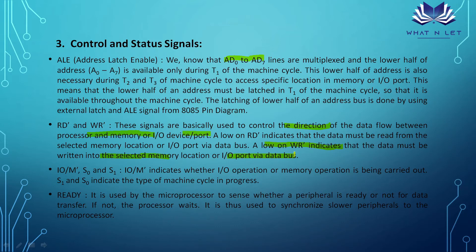The processor can communicate either with memory or with an I/O port. The IO/M bar pin determines this: if IO/M bar is 0, communication is with memory; if IO/M bar is 1, communication is with an I/O port. Whether the operation is read or write depends on the RD bar and WR bar pins.